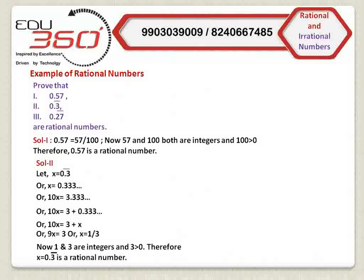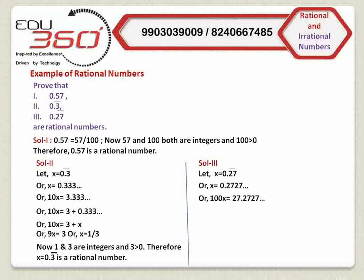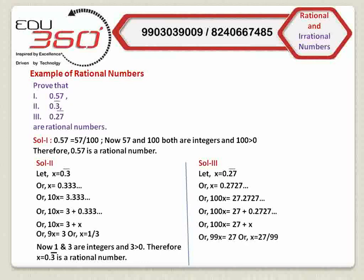Now come to problem number 3. Here we assume that x equals 0.2727... So we can write 100x equals 27.2727... Similarly, we can write 100x equals 27 plus 0.2727. And we can write 100x equals 27 plus x, because we have assumed that 0.2727... equals x. Therefore, we can write 99x equals 27, or x equals 27 by 99. Now, 27 and 99 are integers and 99 is greater than 0. Therefore, x equals 0.27 recurring is a rational number.